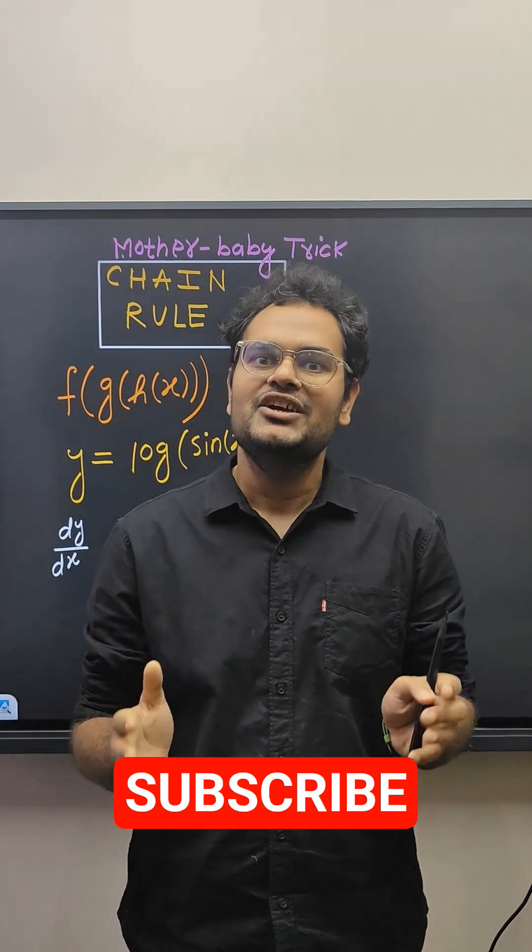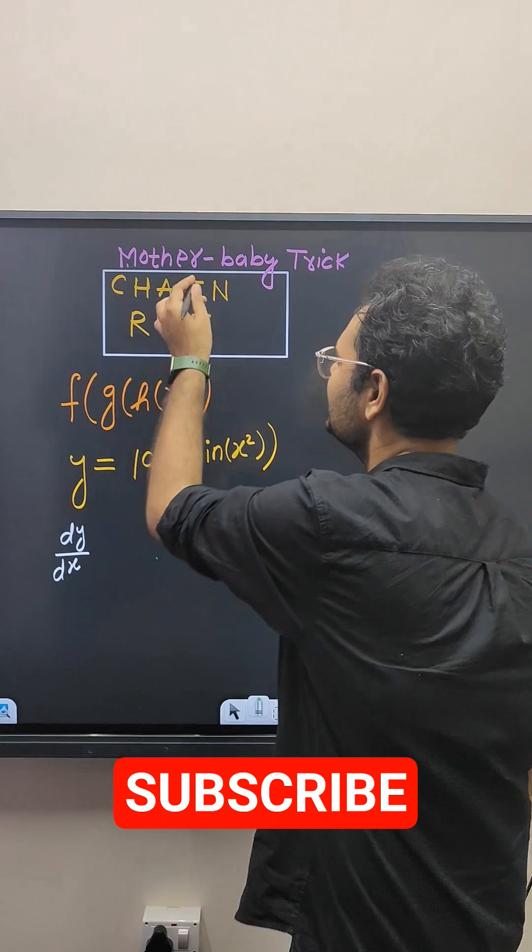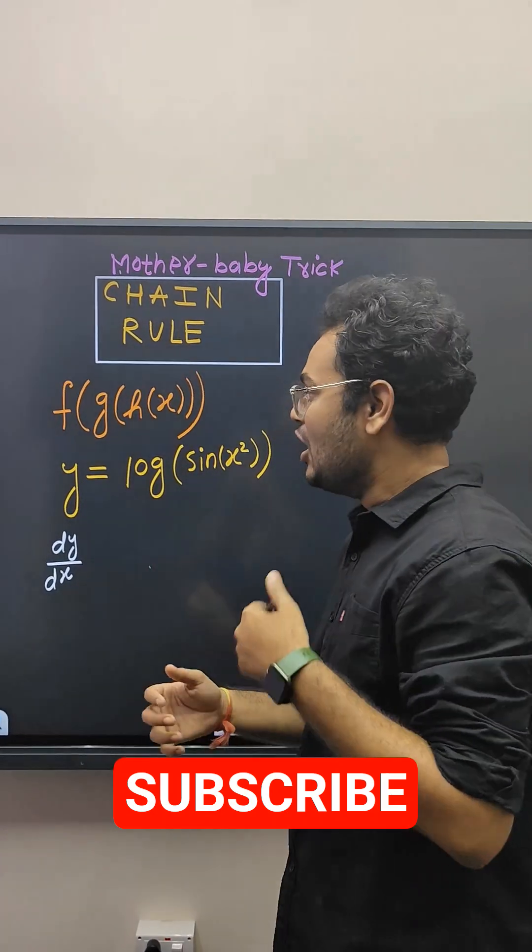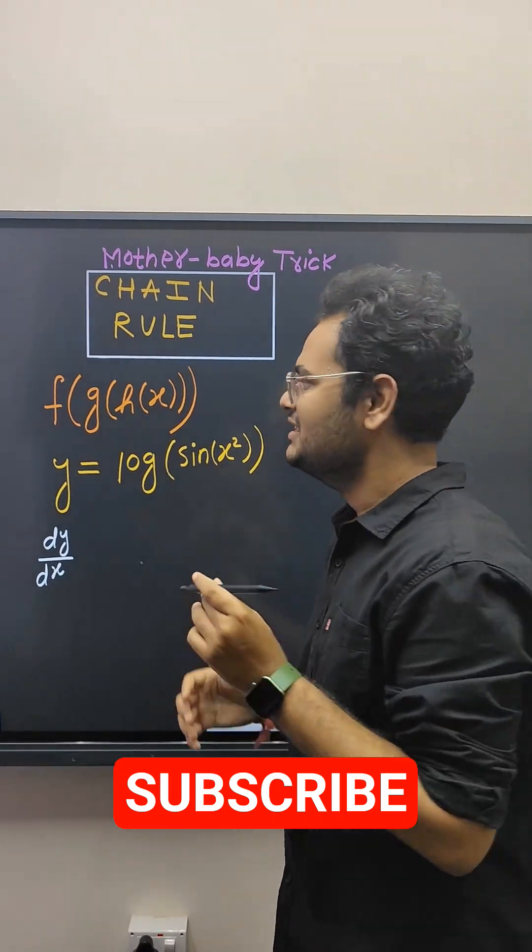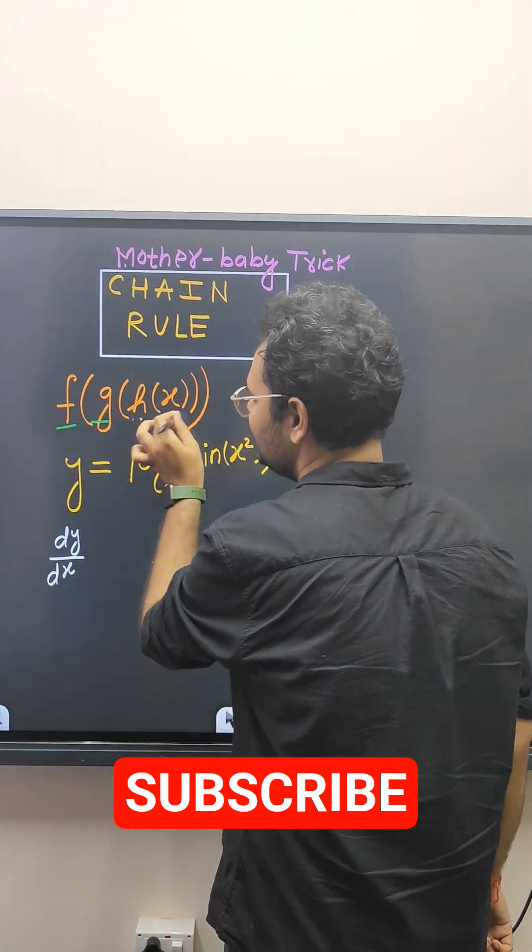Let us discuss a super trick to solve questions of chain rule which is called the mother-baby trick. How to do it? First condition is that there should be a function of the form function within the function.